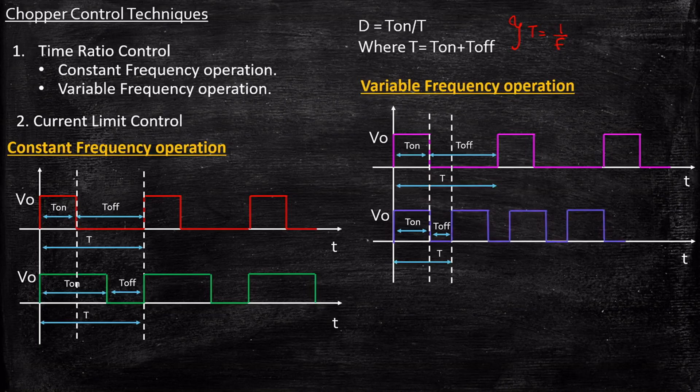So this way I'll be able to again control the output voltage. There are two possible ways in time ratio control: through constant frequency and variable frequency. In constant frequency, we are controlling the T_on, varying the T_on. In variable frequency, we are keeping T_on constant and varying the frequency alone.